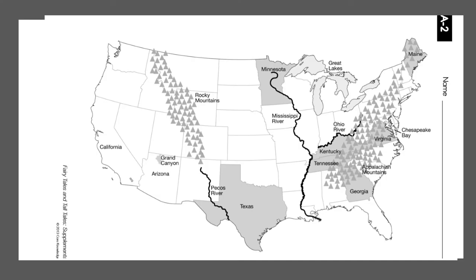Today's tall tale is interesting because for a very long time, no one knew if John Henry was a real person or not. But today, some historians — people who study the past — believe there really was a man named John Henry who really did lay railroad tracks. No one knows exactly where he is from. Some people have said he's from Georgia, Tennessee, or Virginia. Work with mom or dad to find those places on our map and look at which of those states is most to the west.